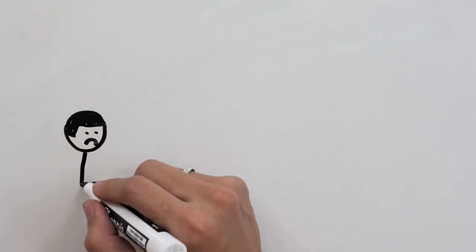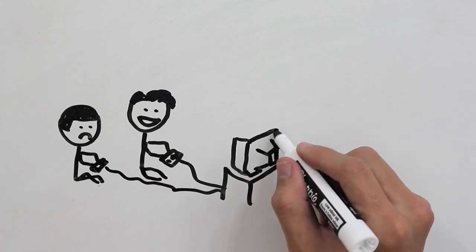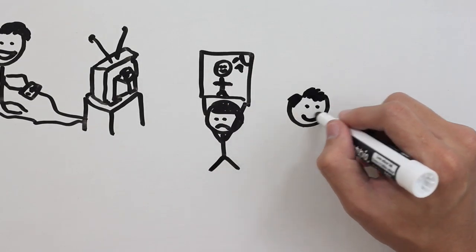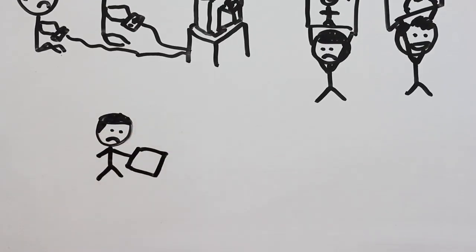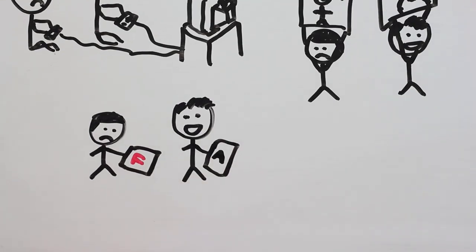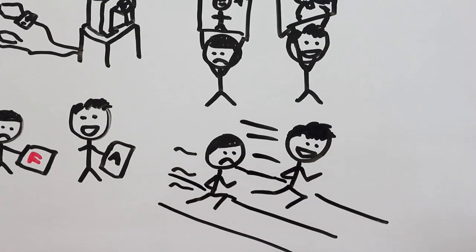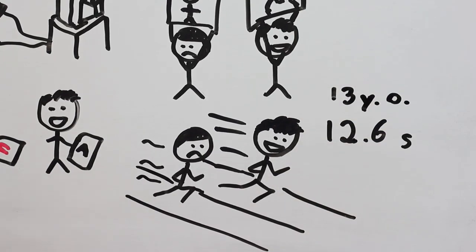My brother could always beat me in everything, like video games. We used to play Marvel vs. Capcom, but he was way better than me. Also at drawing, but as you can see, my drawing rocks right now, or maybe not. At school, he always had better grades than me. And at sports, I wasn't really that bad, but my brother could run 100 meters in 12.6 seconds when he was 13 years old, and I can't do it even now.